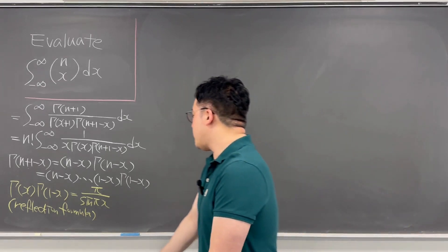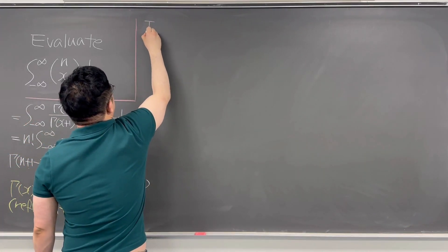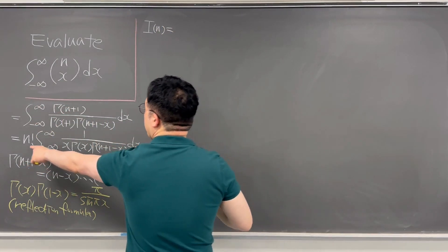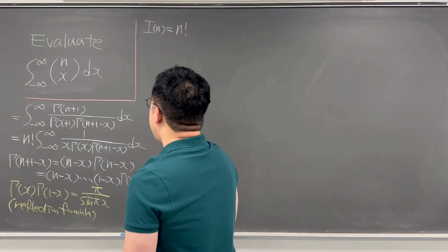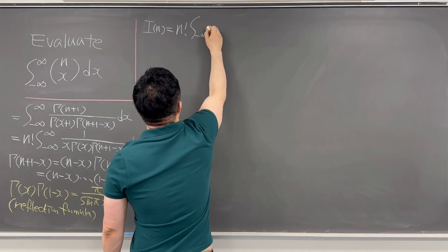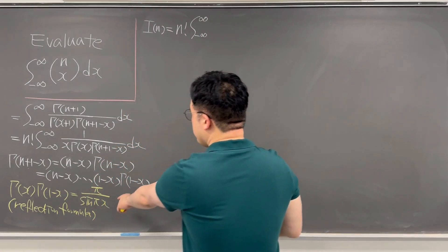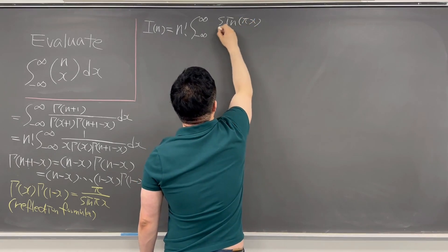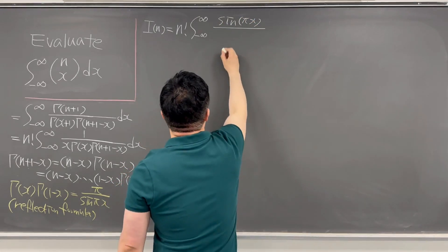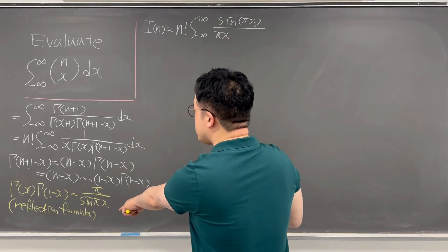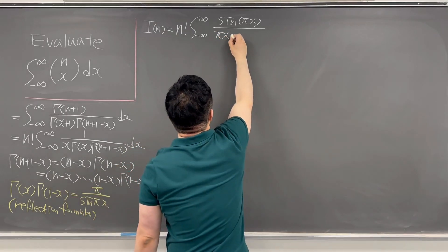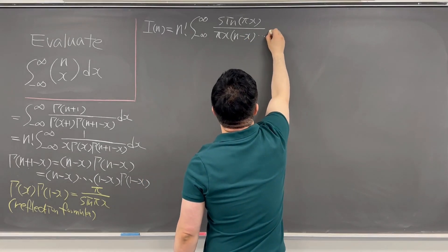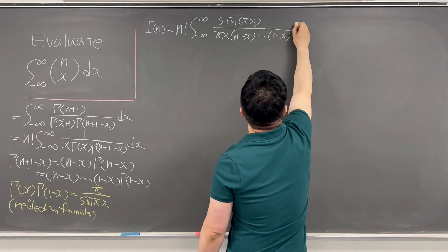Using the reflection formula, gamma(x) times gamma(1-x) equals pi over sin(pi·x). That is why we can represent the integral I_n. So I_n equals n factorial times the integral from negative infinity to infinity of sin(pi·x) divided by pi·x times (n-x) times all the way up to (1-x), dx.